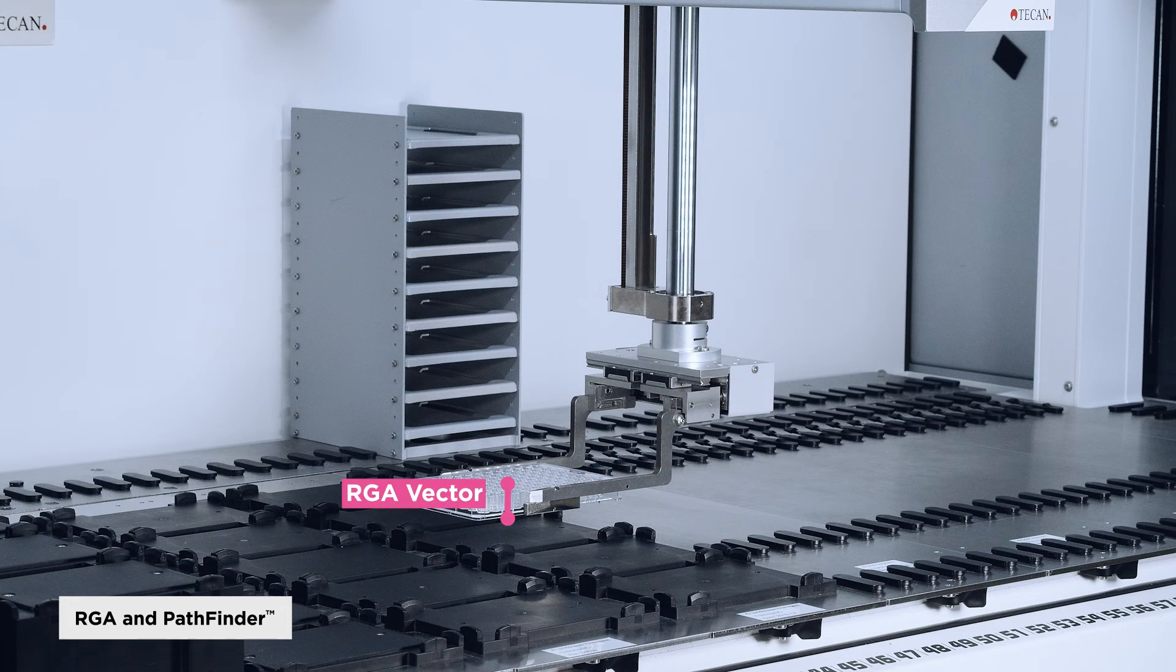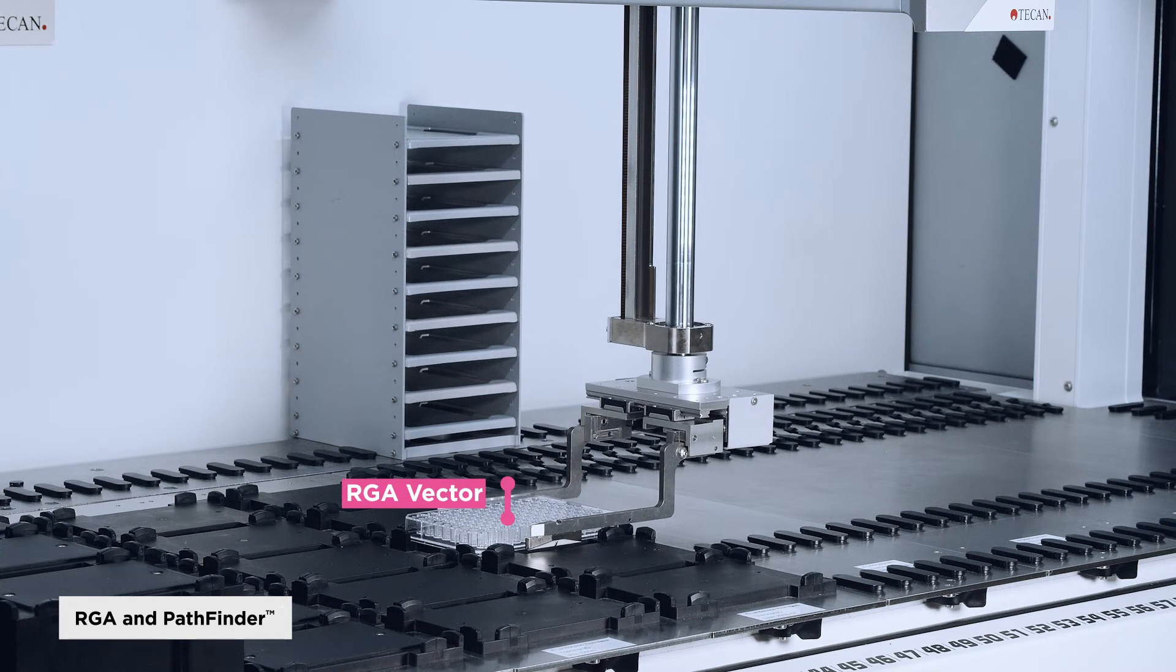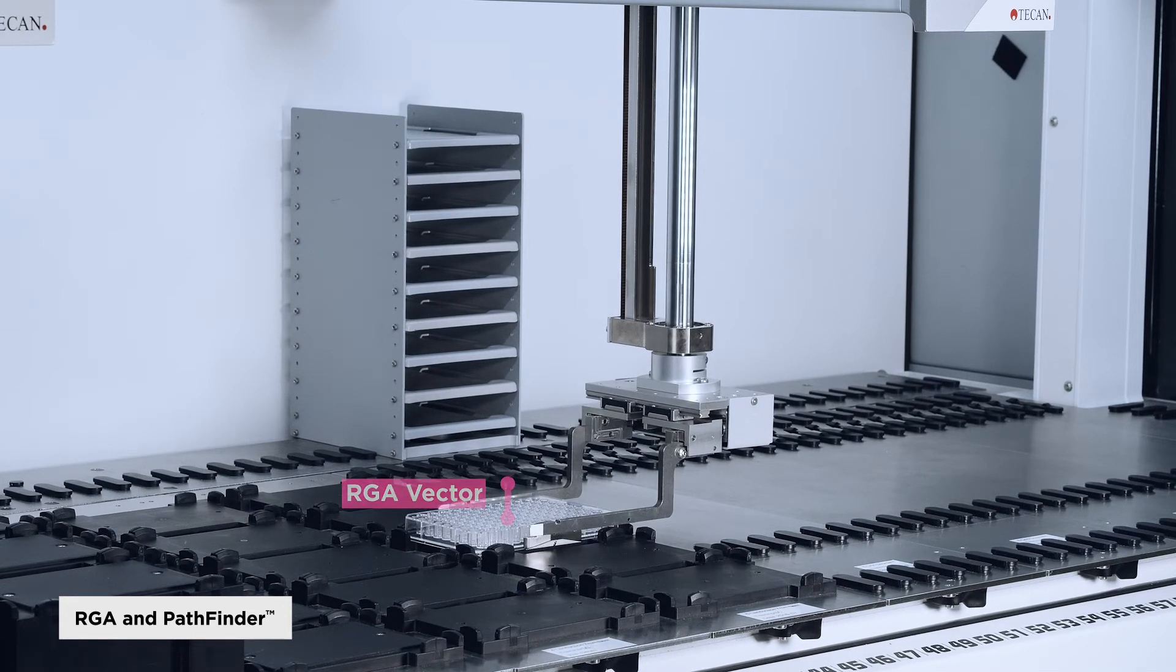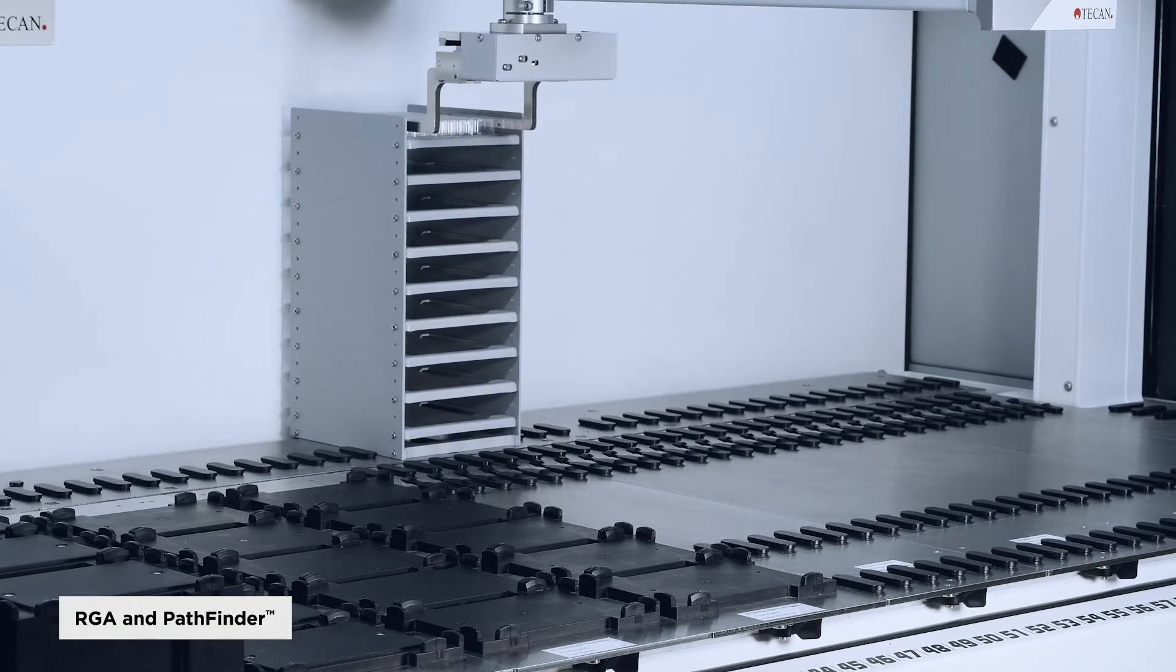Here again, the vector of the target carrier takes the arm from the safe position to the end position, releasing the plate and moving back to the safe position. This is essentially how the movement of a robotic gripper arm transfer labware command works.